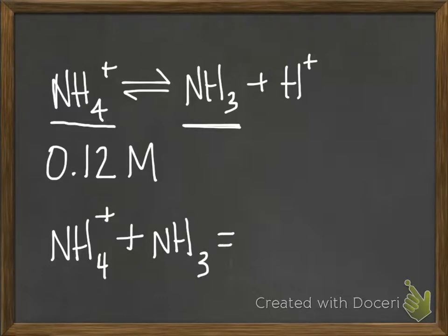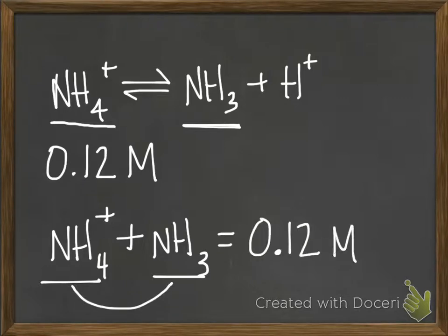You don't create more ammonium or ammonia out of the blue. The two of these have to equal the amount you started with, because NH3 comes from NH4+ reacting with OH-.